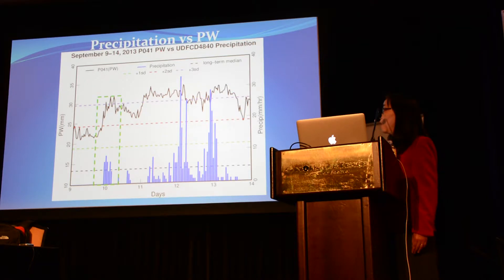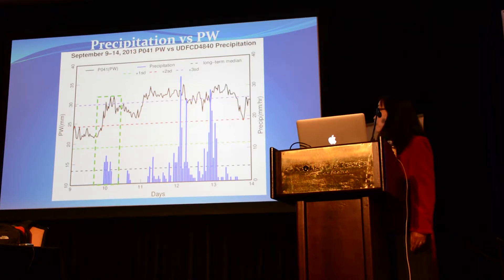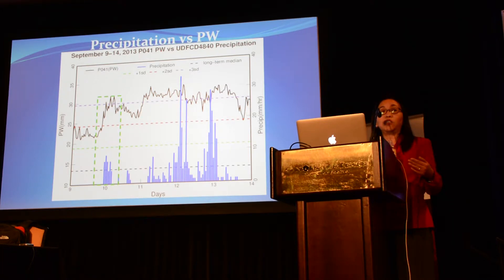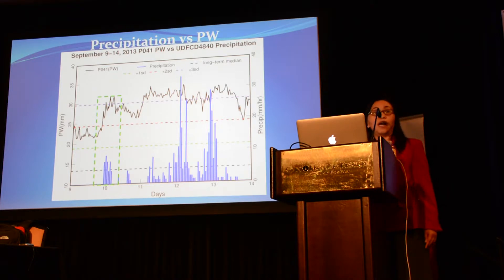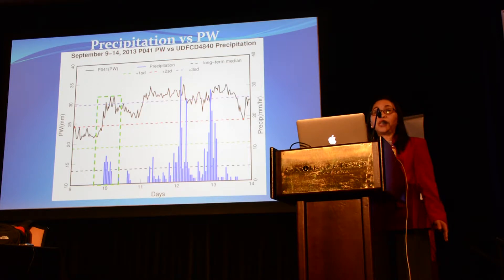Comparing just during the event: here is your water vapor amount, and here is your precipitation. When it started, the water vapor increased dramatically from below two standard deviations of the seasonal mean to above three standard deviations. Then the water vapor held constant during the event. Afterwards it dropped down. During this event, this leveling of the water vapor is due to the atmosphere being totally saturated, so it doesn't change at all.